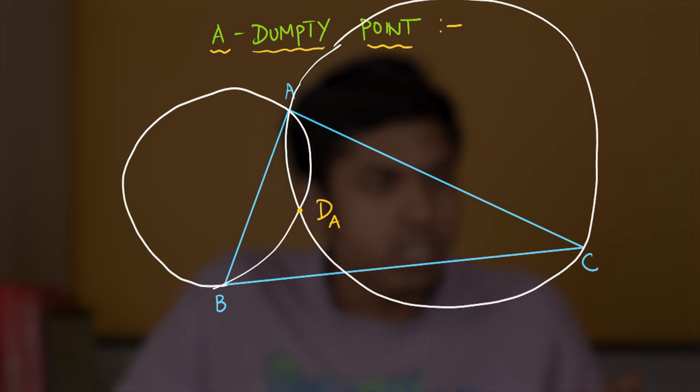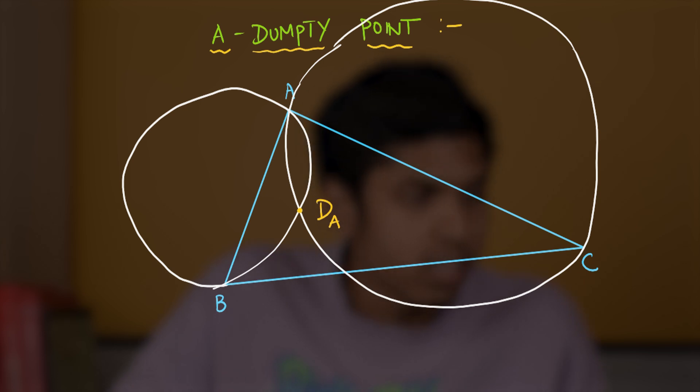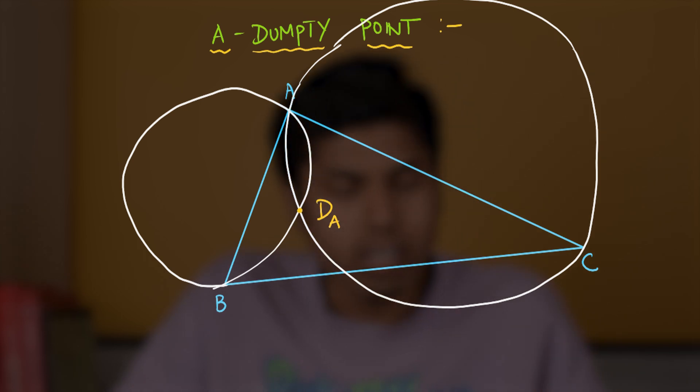Similarly, you can construct circles tangent to AB at B and BC at B to intersect at B Dumpty Point. And, similarly, C Dumpty Point.